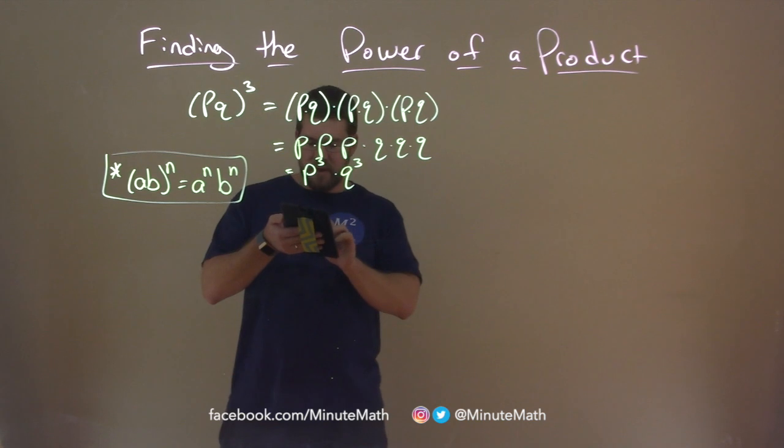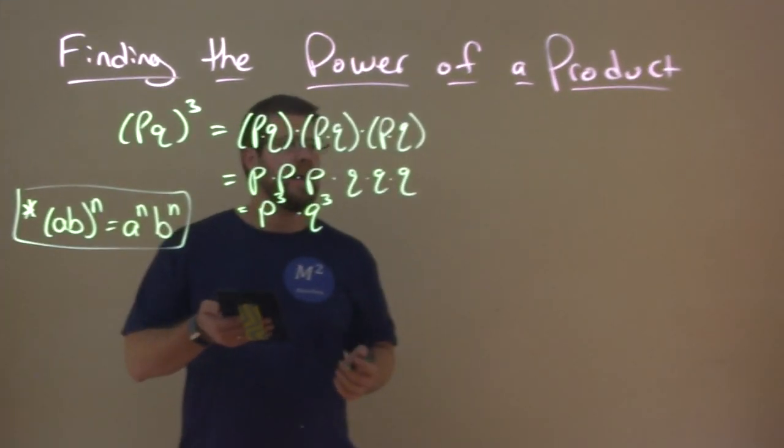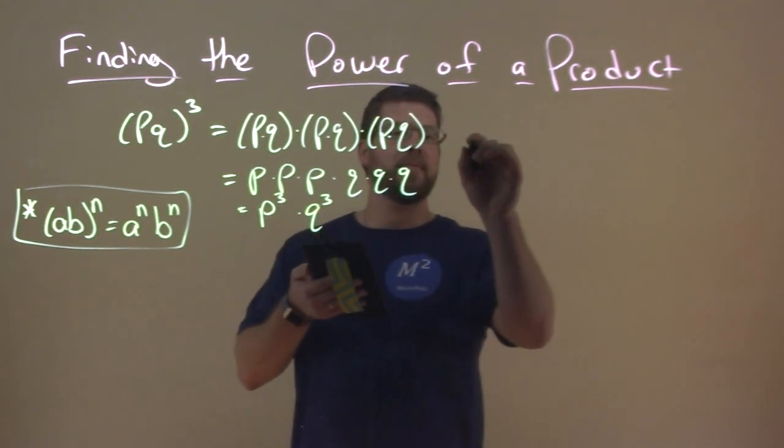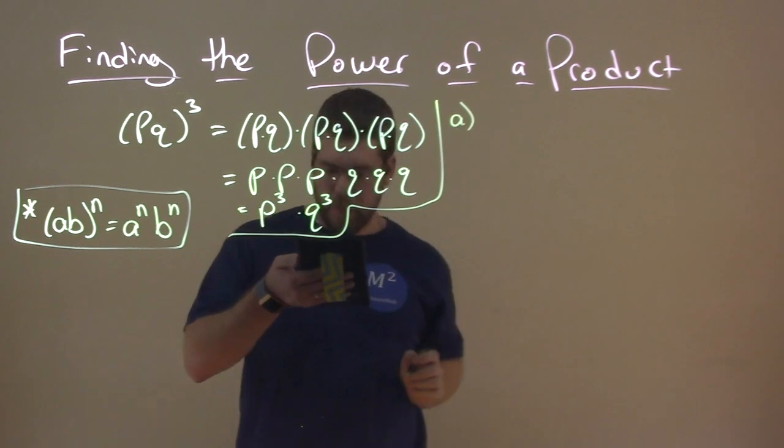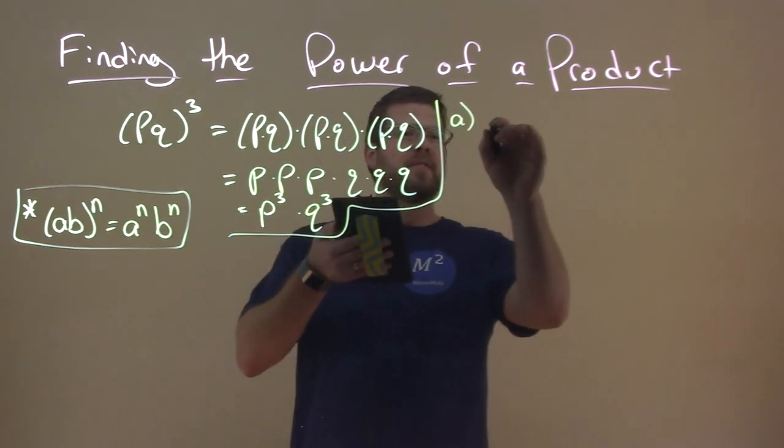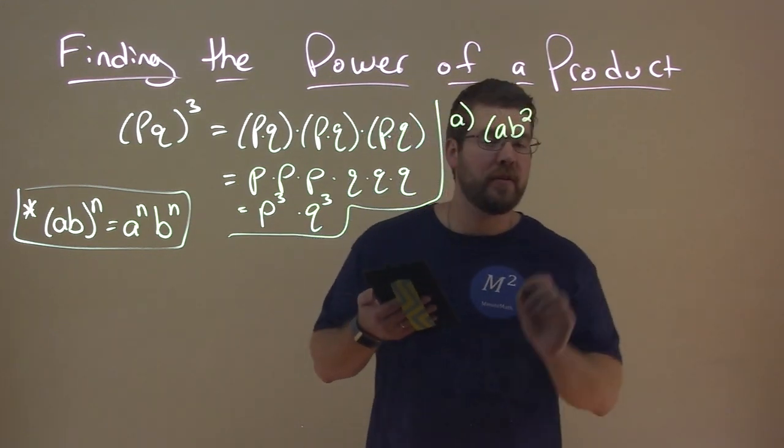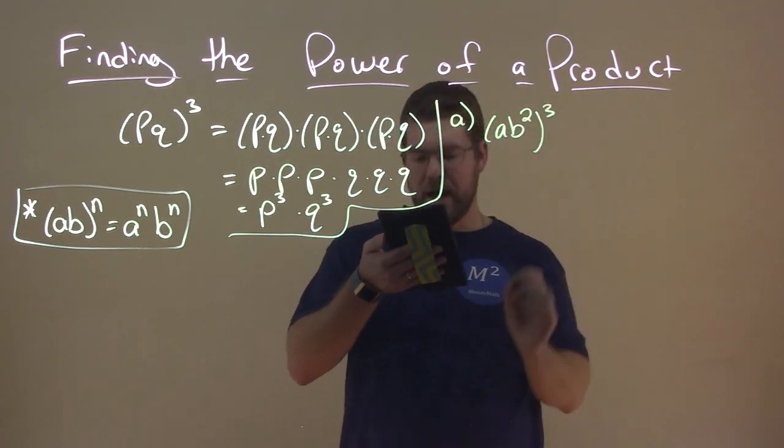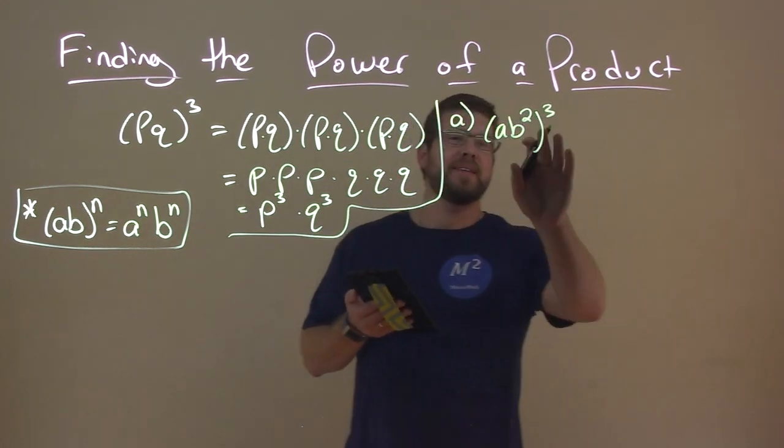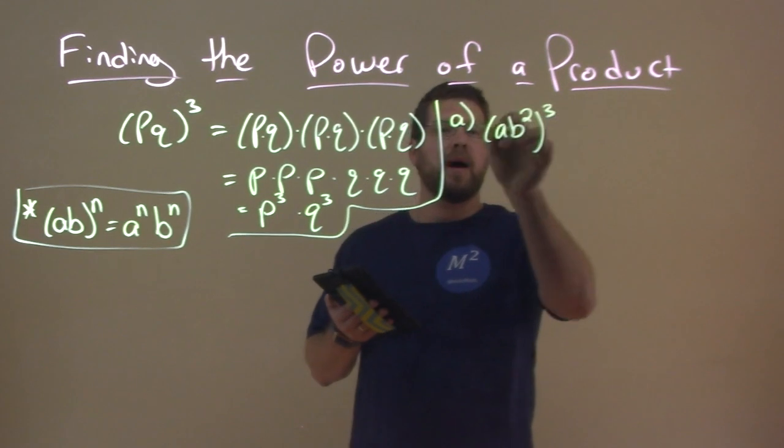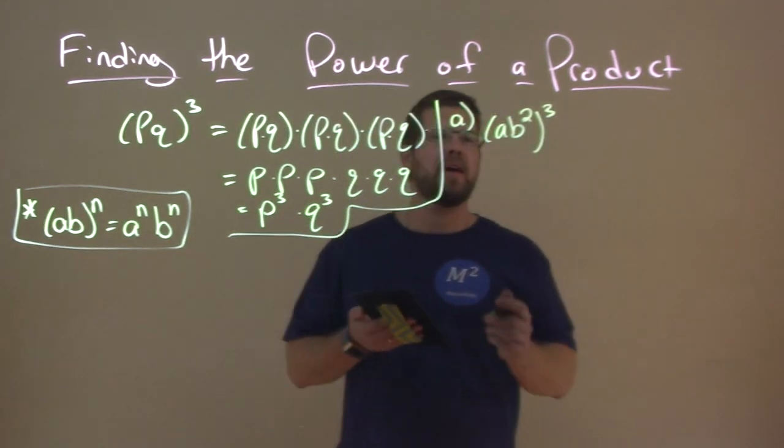So let's go through some examples here and see what we can do to simplify and practice this. Let's kind of break this down here. A. Let's say we're given a, b squared. Remember, the square is just the b all to the third power. Well, our rule states here that we can transfer this third power to each exponent on the inside. And remember, what we need to do, let's just write it out here before I get to that.